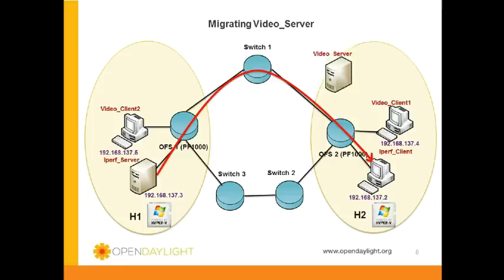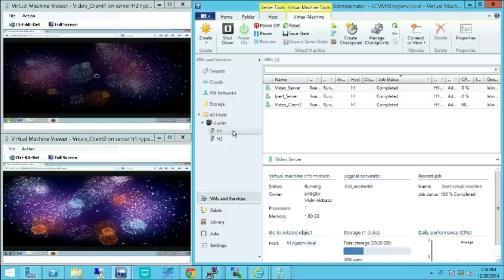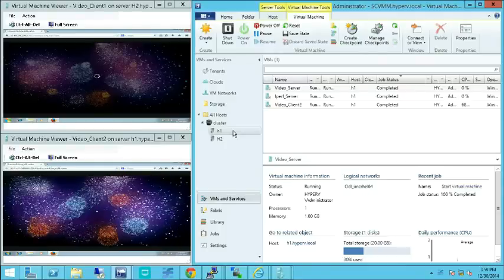Now the video server is migrated from H1 Hyper-V to H2 Hyper-V. After migration, the video packets to video client 1 are streamed through OFS2 in the Hyper-V H2. The video packets to video client 2 are streamed through OFS2, SW1, and OFS1. As a result of this live migration, the video quality of client 1 is improved and the quality of client 2 is deteriorated.